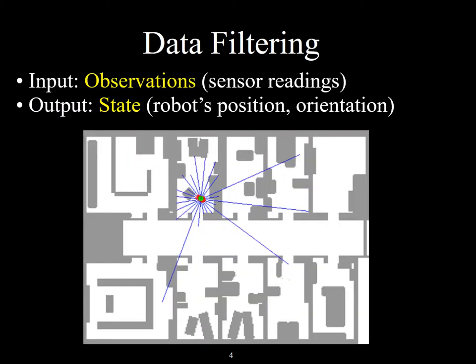For robotics, the input to our filter would be a set of observations — more technically, sensor readings. Here's a schematic diagram of a robot with a lidar unit of the kind you'd find on a self-driving car. It's sending out laser beams, trying to detect the distance from various points to the walls in the building it's navigating. The output is the state of the robot — basically where it is and how it's oriented: latitude, longitude, and the heading it's facing. Three values that pretty much tell us where it is in the building.